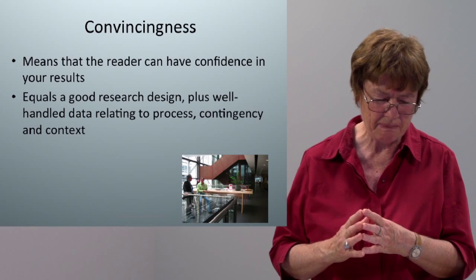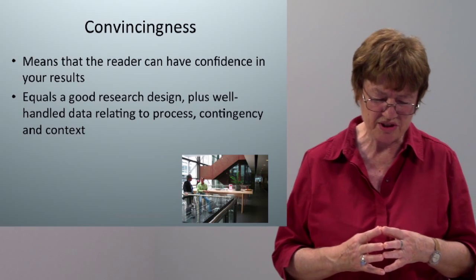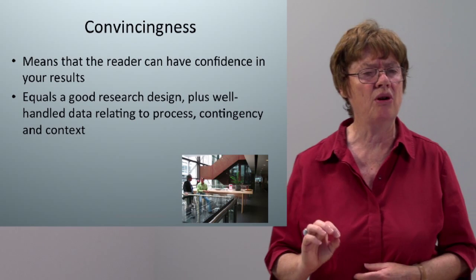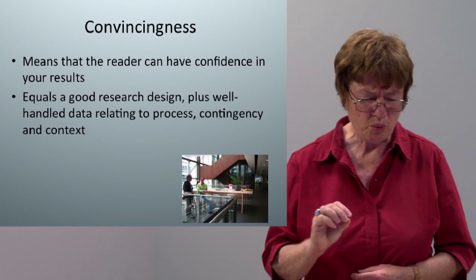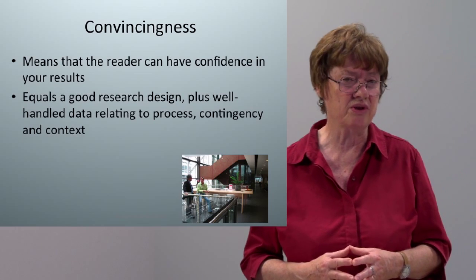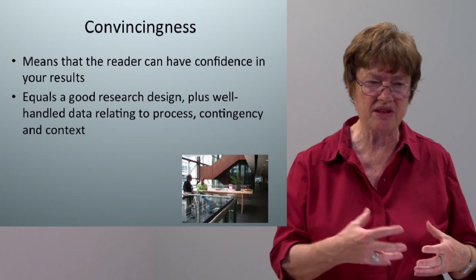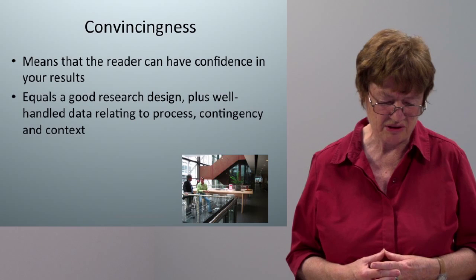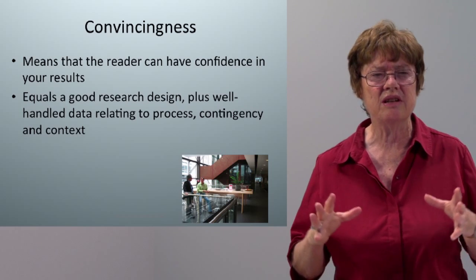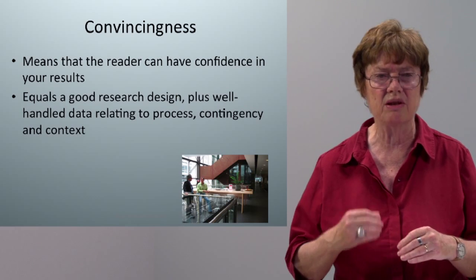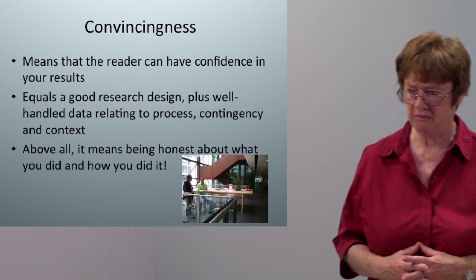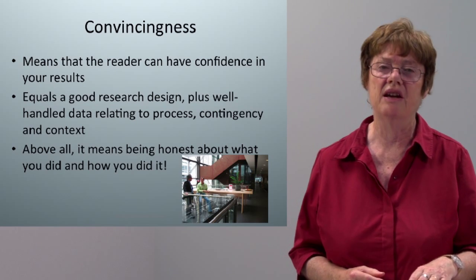Let's talk about what convincingness actually consists of. It means you have a good research design plus well-handled data relating to process, contingency, and context. Process means you find out what's going on and transmit that information both in your research and your writing up of it. Contingency means knowing what the external factors are doing — the size of the organisation, its history, the type of work it's doing — because they will vary from one case to the next and will influence the results you see. Context means the history of each case; you can't just take a snapshot in time. With each case you really do need to know where it's coming from and where the people are coming from.